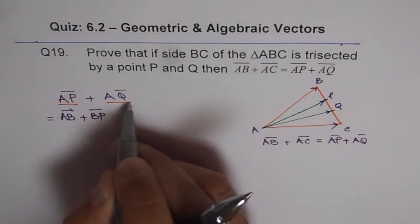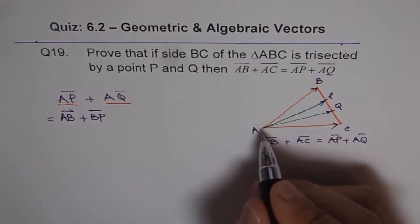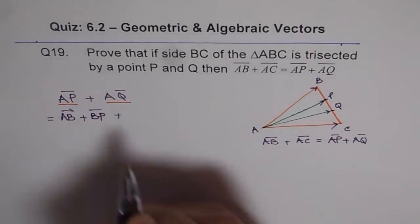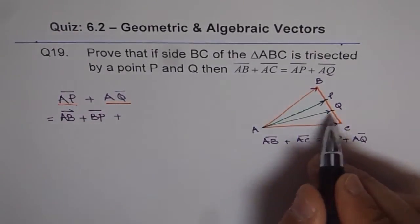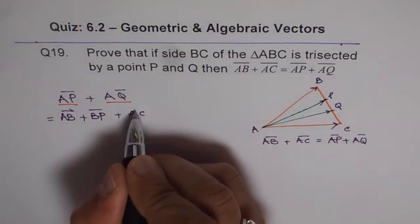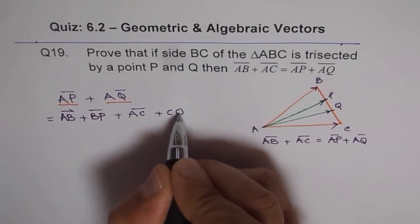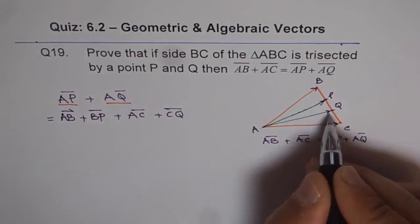And now what is AQ? Now AQ can be written as AC + CQ. Correct? So AC + CQ.